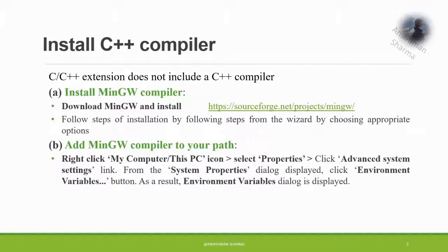Once you have installed VS Code, the next thing is to install the C++ compiler. The C++ extension does not include the compiler — you have to install MinGW, which is available from the internet. Download it and follow the installation steps. You can similarly install C and other languages with MinGW. After installation, ensure the MinGW compiler path is added to your system's PATH environmental variable so it can be verified and work on your system.